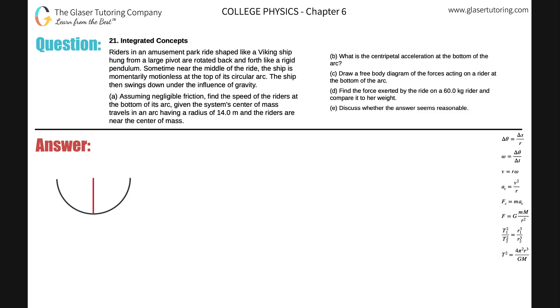Number 21. Integrated Concepts. Riders in an amusement park ride shaped like a Viking ship hung from a large pivot are rotated back and forth like a rigid pendulum. Sometime near the middle of the ride, the ship is momentarily motionless. At the top of its circular arc, the ship then swings down under the influence of gravity.